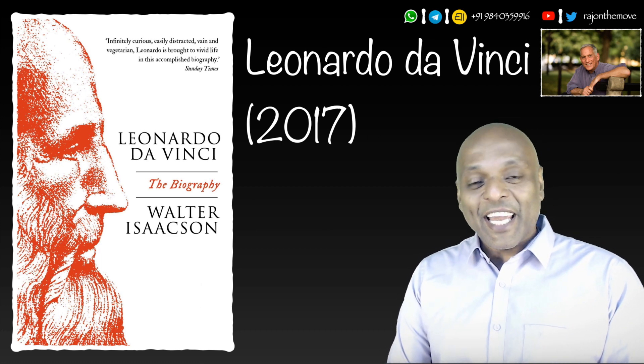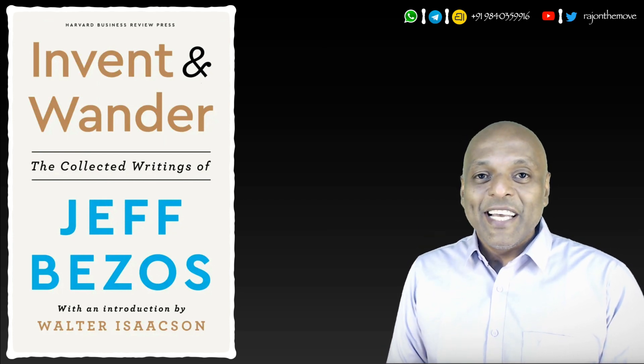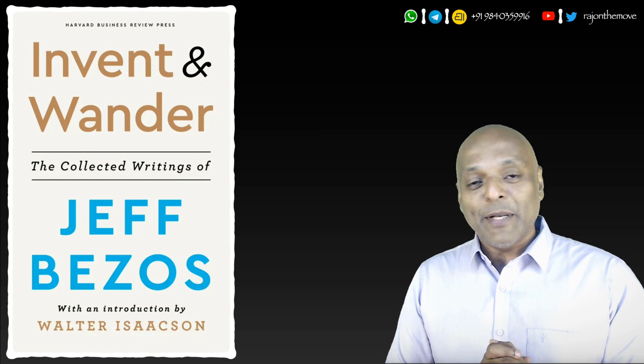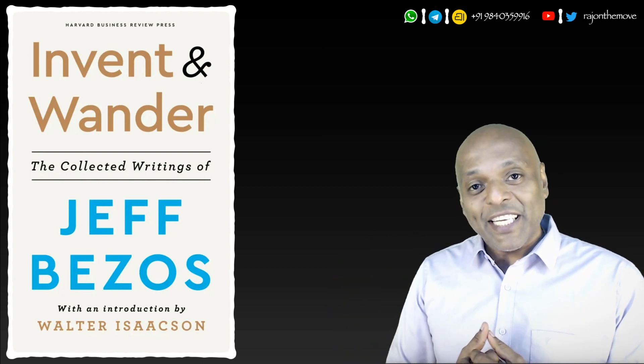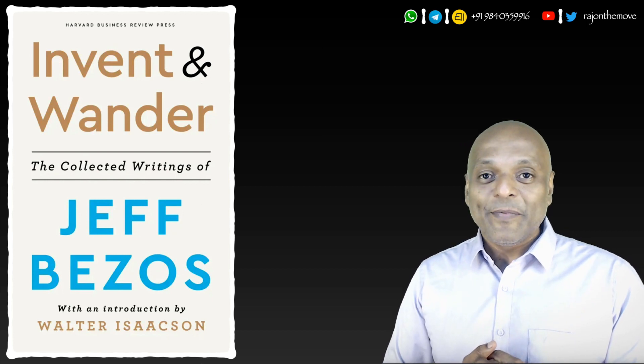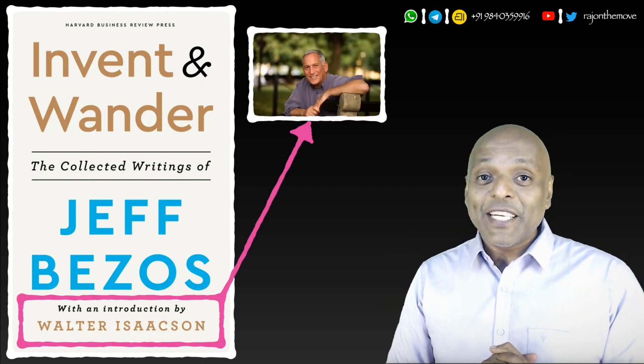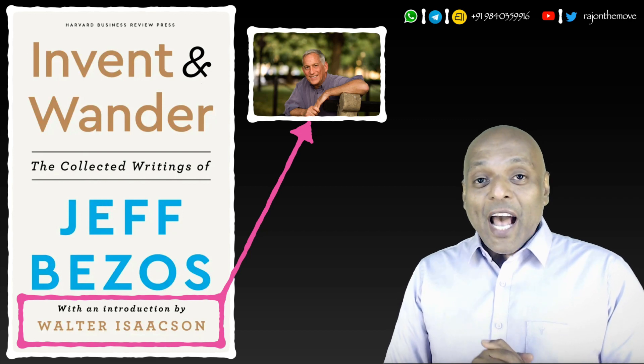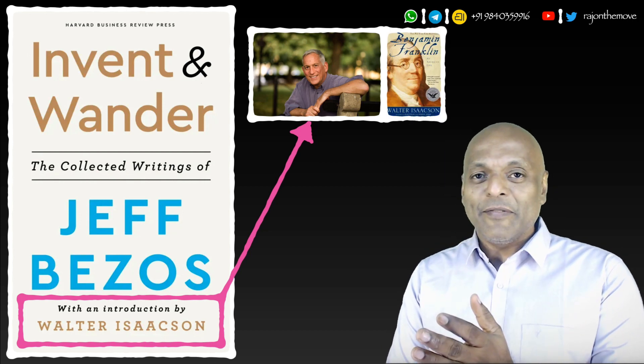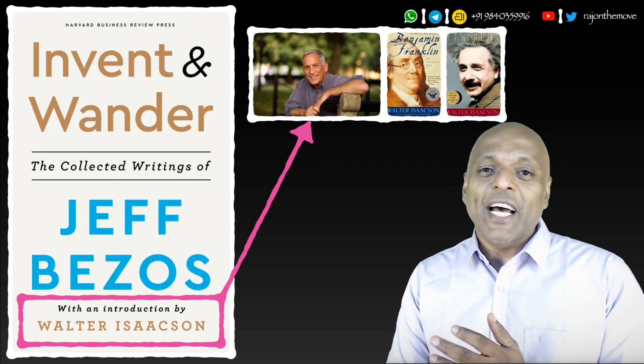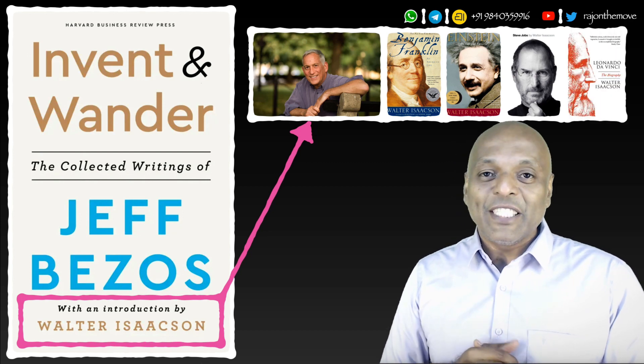Recently, I came upon a book called Invent and Wander. Jeff Bezos, the founder of Amazon, his collected writings in a book. The forward by Walter Isaacson. In that forward, he refers to the Benjamin Franklin book, the Einstein book, the Steve Jobs book and the Da Vinci book.